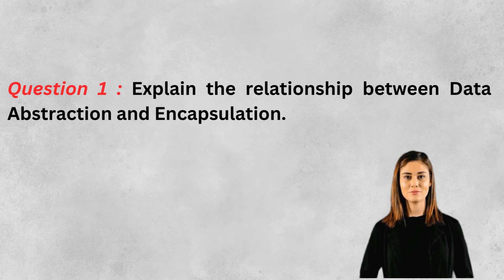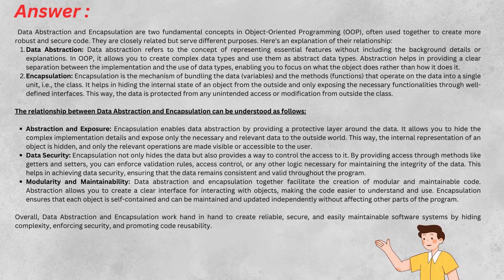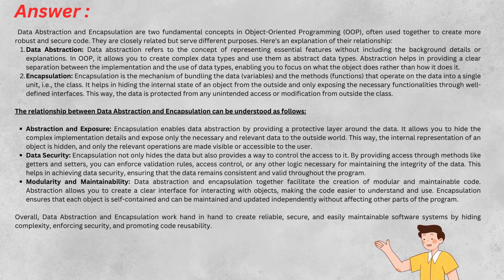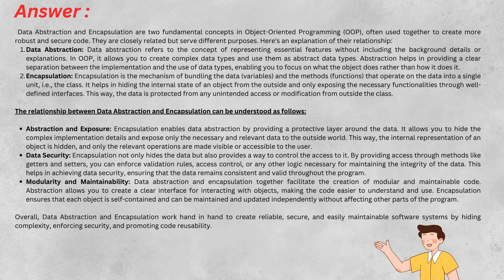Data abstraction and encapsulation are key concepts. Data abstraction focuses on representing essential features while hiding unnecessary details, allowing for a clear interface. Encapsulation bundles data and methods in a class, protecting internal state and exposing only required functionalities.